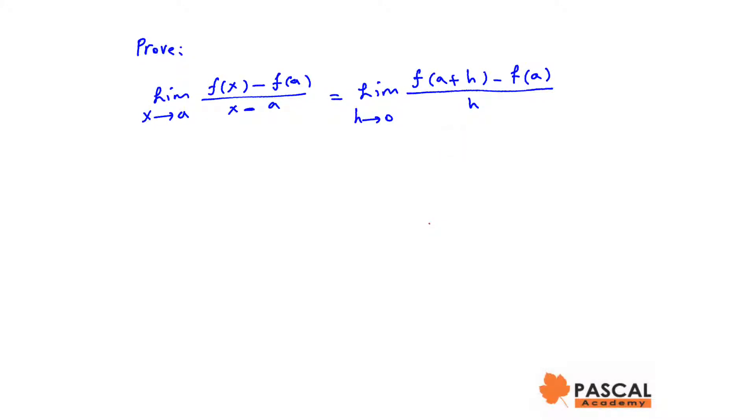To prove this algebraically, we assume x minus a is h. Therefore, x would be a plus h and as x approaches a, h approaches 0.